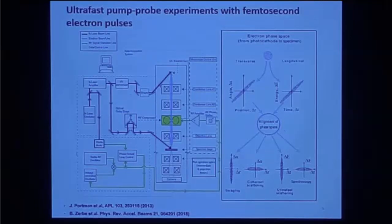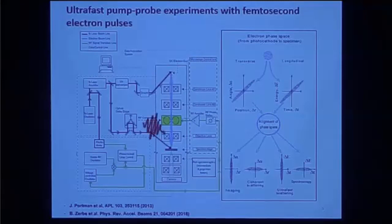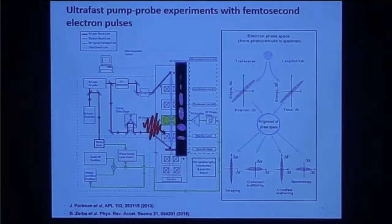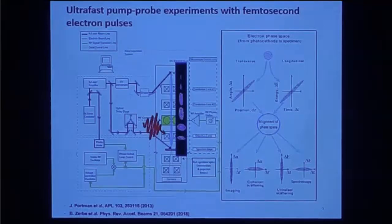To look at these, we do scattering — we measure the correlation function in momentum space, which via Fourier transform translates to a correlation function in real space, where we can build a structural model. We do a pump-probe experiment: we use a laser to pump the system stored in the electron microscope, then send in a probe electron pulse to do scattering. The microscope is a multi-messenger device — you can do imaging, scattering, and spectroscopy — making it useful to look at complex problems like phase transitions across both short and long time and length scales.